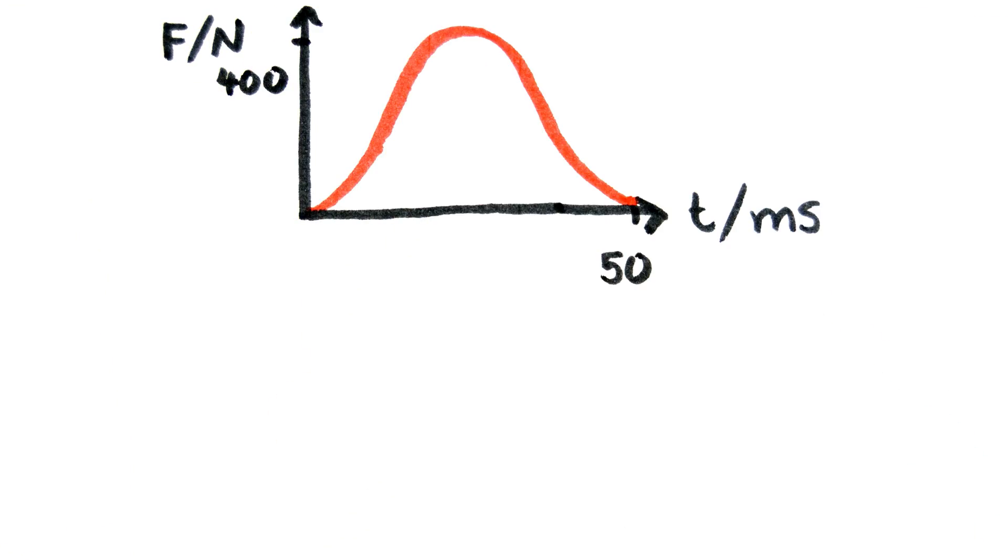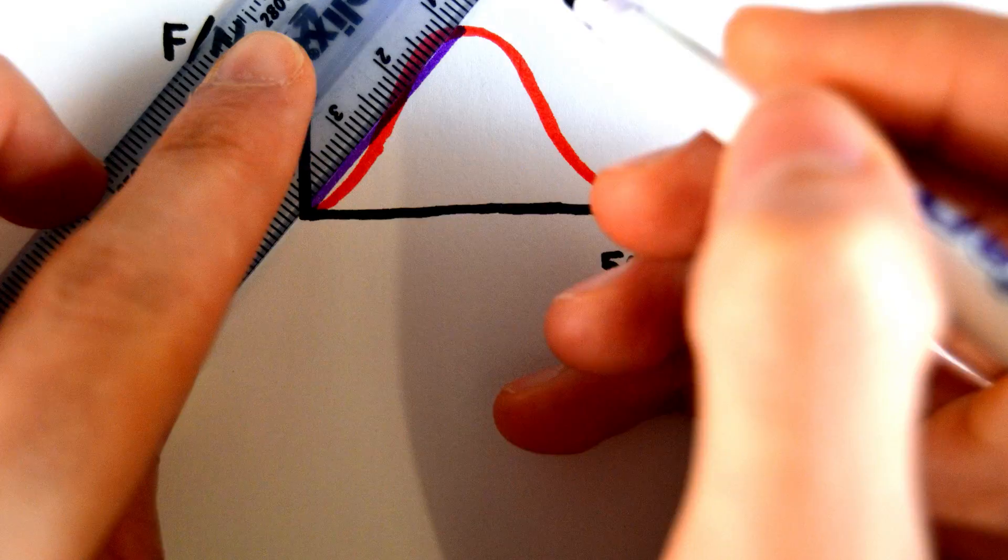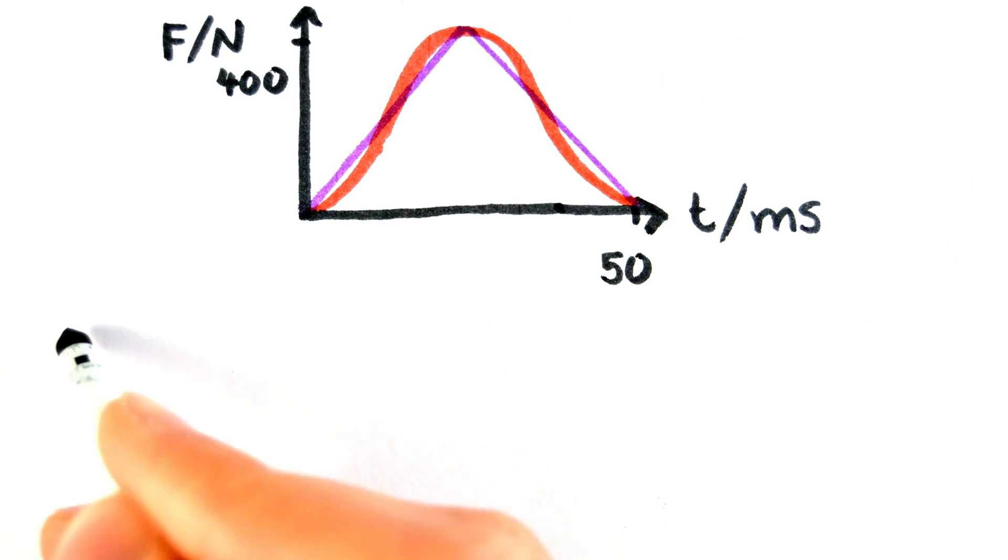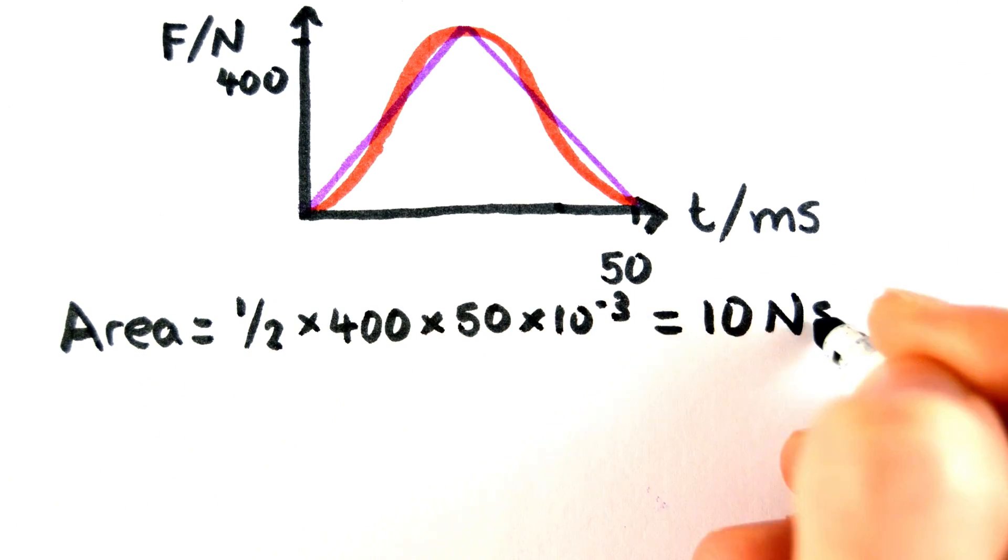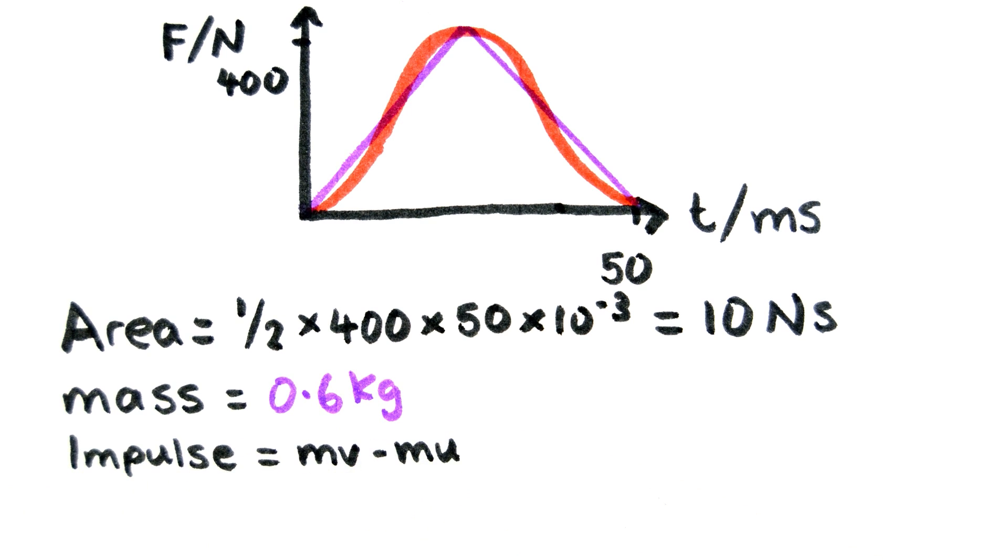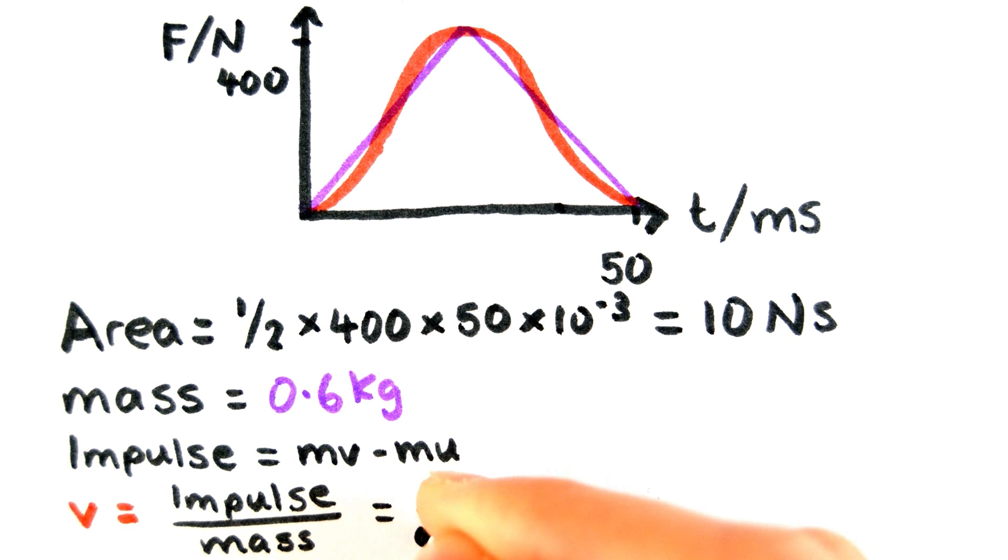For example, this curve of the force acting on a football being kicked can be approximated to a triangle. This makes it a lot easier to work out the area, which is 10 Newton seconds. If the ball had a mass of 0.6 kilograms and was kicked from rest, then since impulse equals the change in momentum, you can work out the speed of the ball when it leaves your foot to be 16.7 meters per second.